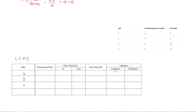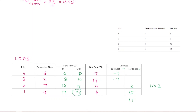For Last Come, First Service (LCFS), job order is 4, 3, 2, 1. Processing times: 8, 2, 7, 4. Due dates: 17, 19, 9, 6. Start times: 0, then 8, then 8 plus 2 is 10, then 10 plus 7 is 17, then 17 plus 4 is 21. Lateness: 8 minus 17 is minus 9 (early). Third job is 2 days late. Fourth job is 15 days late. Total tardiness is 17. Number of late jobs is 2. Max span time is 21. Average flow time: 8 plus 10 plus 17 plus 21 equals 56; 56 divided by 4 equals 14.